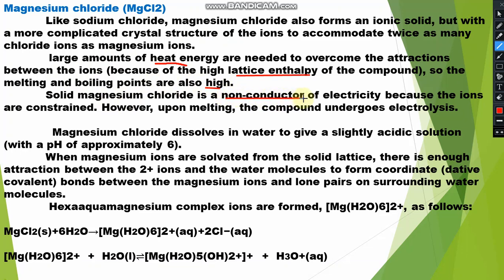Solid magnesium chloride is a non-conductor, as we discussed in the previous lecture — ionic compounds in solid state are non-conductors because the ions are constrained and are not free to move. However, upon melting, the compound undergoes electrolysis. When you melt magnesium chloride it undergoes electrolysis, meaning electricity is conducted through the electrolyte. Magnesium chloride in molten state or solution form is an electrolytic conductor.